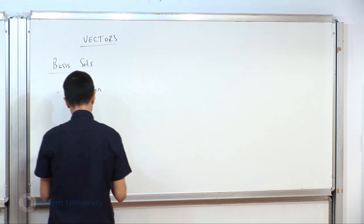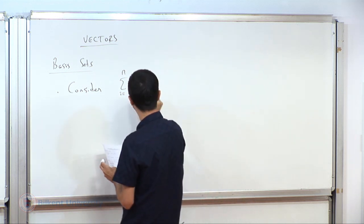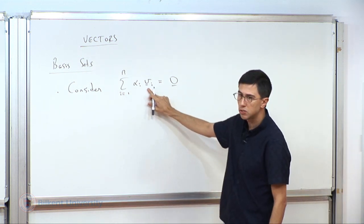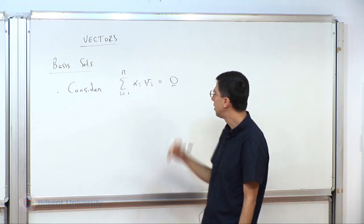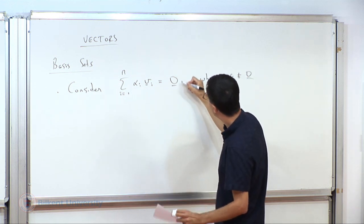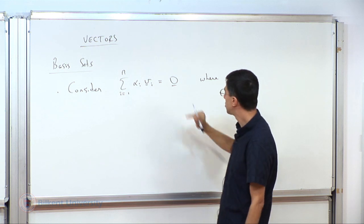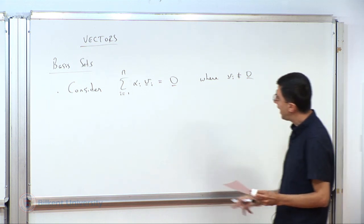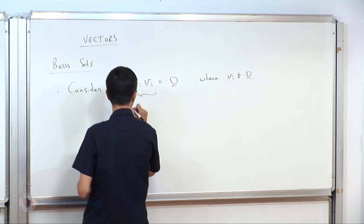Let us consider a sum. I'll use a number n whose value I don't necessarily know, and take a number of vectors v1, v2, v3, etc., each with a coefficient α1, α2, etc. — numbers like 0.5 or 2, I don't know what they are. I assume each vector is non-zero. Taking a number of vectors, attaching coefficients, and summing them up is called a linear combination of vectors.